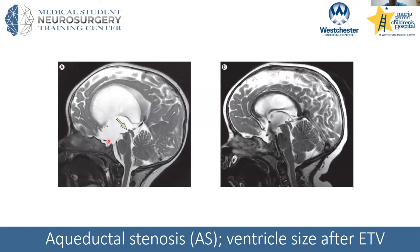Here's an example of a patient who had an ETV for aqueductal stenosis where the ventricles came down afterwards. However, that's not always the case — VP shunt is a much more effective way of decreasing ventricle size. With ETV you do not always see such a dramatic decrease, and studies are still ongoing to determine if that has clinical significance.